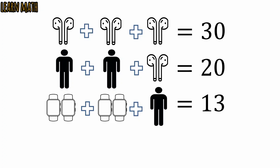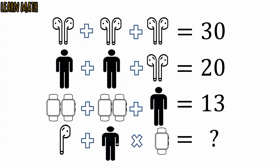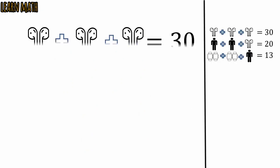Let's begin to solve the question. In this question we have given three equations and we have to find the value of this fourth equation. What is the value of this fourth equation? Let this is the first equation. Simplify this and we will get three ear parts is equal to 30.